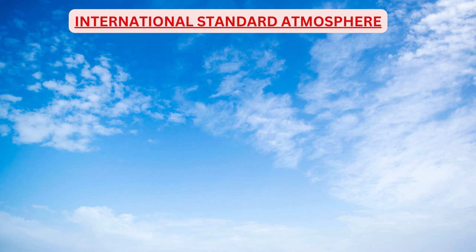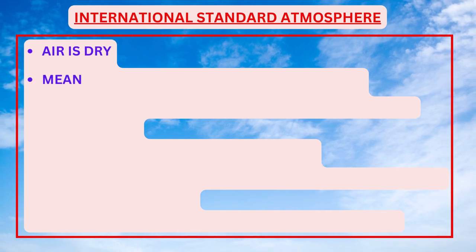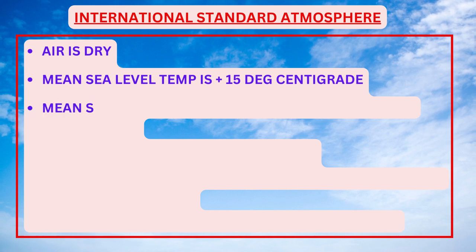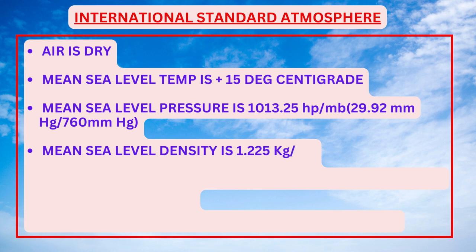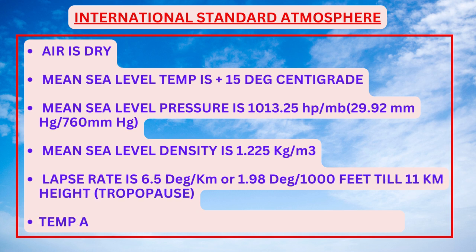These standard definitions are important from the exam perspective. Air is considered to be dry. Mean sea level temperature is 15 degrees Celsius. Mean sea level pressure is 1013.25 hectopascals, or 29.92 inches of mercury, or 760 mm of mercury — all are the same. Mean sea level density is 1.225 kg per cubic metre.